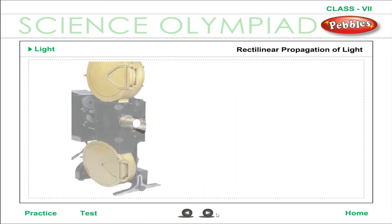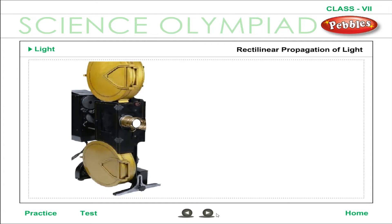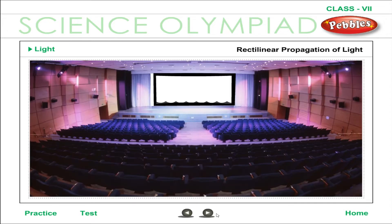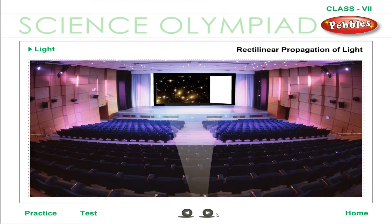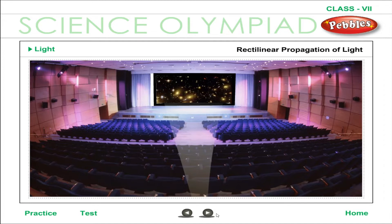Rectilinear propagation of light: light travels in a straight line. While seeing a film in a cinema hall, you may have noticed that the light from the projector appears to go in a straight line towards the screen. What you see is not light itself, but innumerable dust particles in the path of light which become visible when light falls on them. This shows that light travels in straight lines — the rectilinear propagation of light.